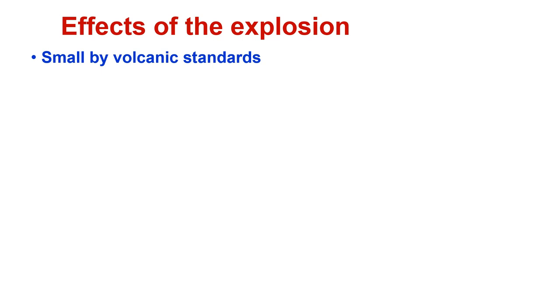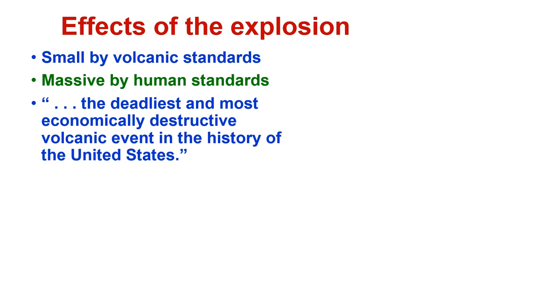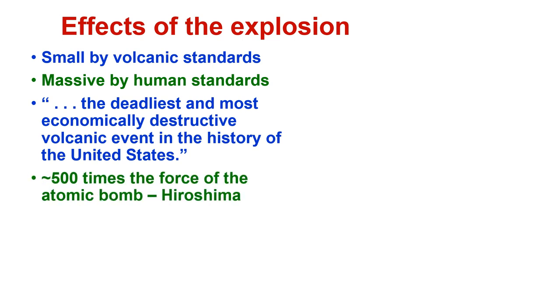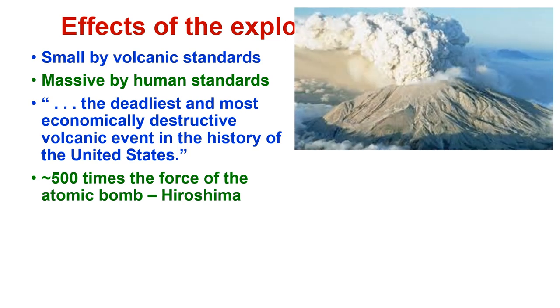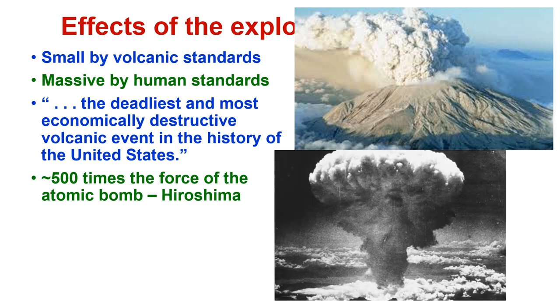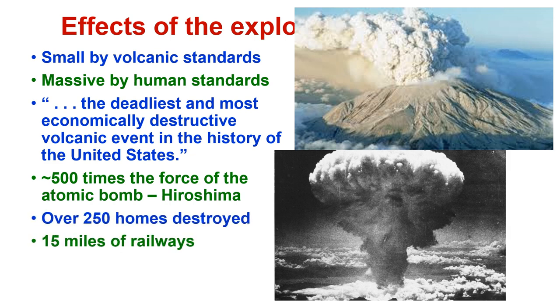The effects of the explosion: it was small by volcanic standards but massive by human standards. It was quoted to be the deadliest and most economically destructive volcanic event in the history of the United States. It was 500 times the force of the atomic bomb. Over 250 homes were destroyed. 15 miles of railway and 185 miles of highway were destroyed.